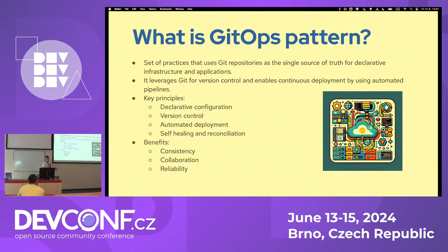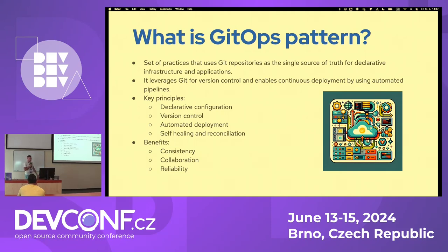There are many principles. For example, you can store declarative configuration in a GitOps repository. You can use version control from Git, so you always know which version of your configuration is running on top of your clusters or fleet of clusters. There are also many tools for automated deployment. One of the best benefits is collaboration, because GitOps allows DevOps, QE, and developers to work on the same Git repository and control deployment and configuration.